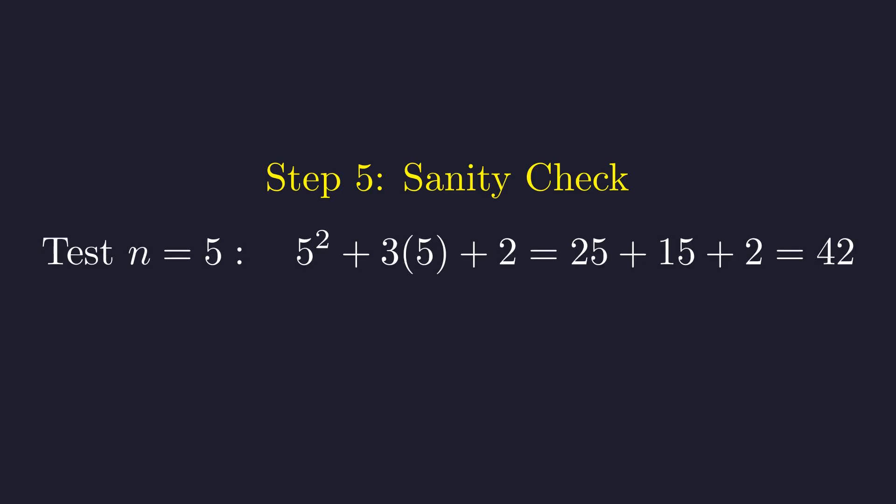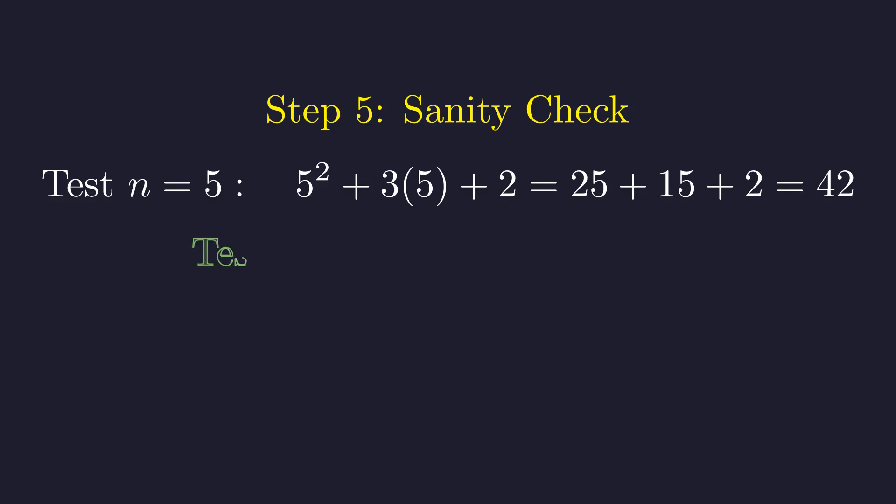Our theory predicts that only integers with a remainder of 5 or 6 will work. Before counting, let's verify this with a few examples. Let's test n equals 5. The expression evaluates to 42. 42 is divisible by 7. The theory holds.